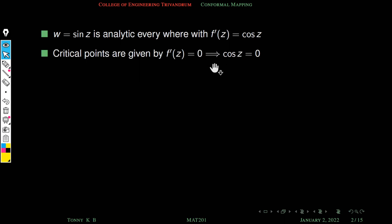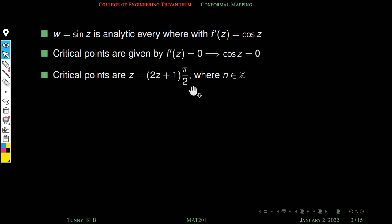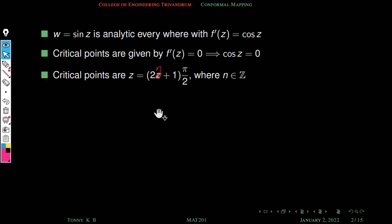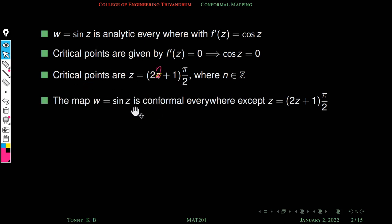So what are the critical points of this function sin z? That means what are the solutions of cos z equal to zero? The solutions are odd multiples of pi by two, that is (2n+1)π/2. So sin z is conformal everywhere except z equal to (2n+1)π/2, where n is an integer.